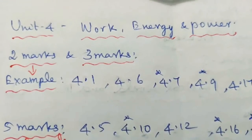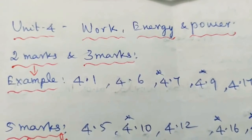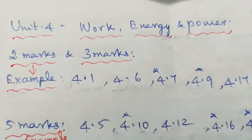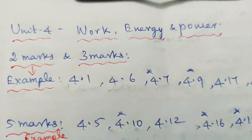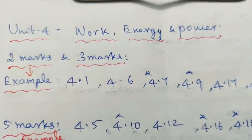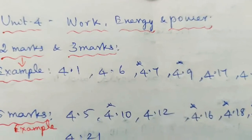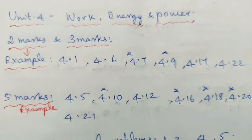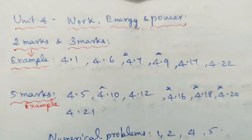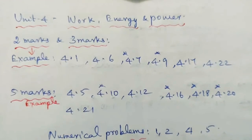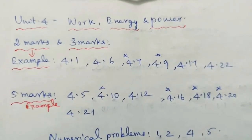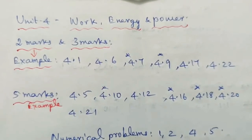Unit 4: Work, Energy and Power — 2 marks and 3 marks. Example Problems: 4.1, 4.6, 4.7, 4.9, 4.17, and 4.22.